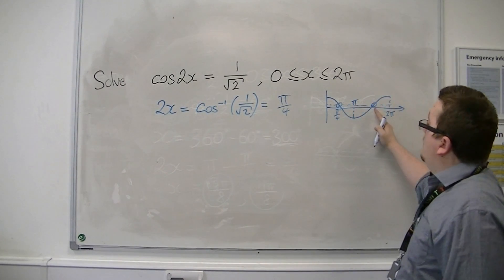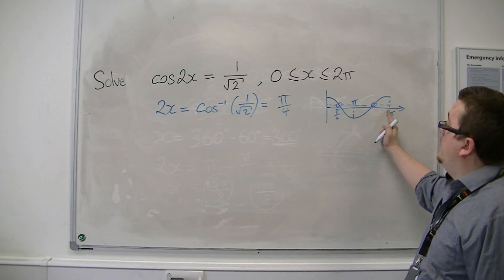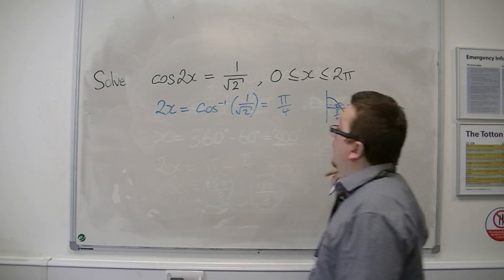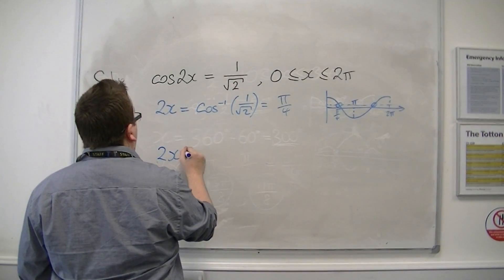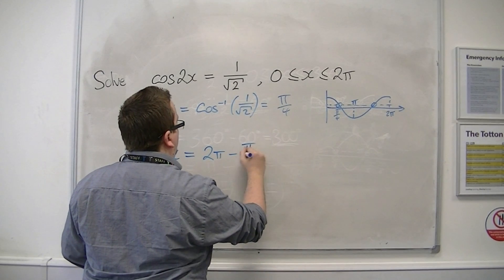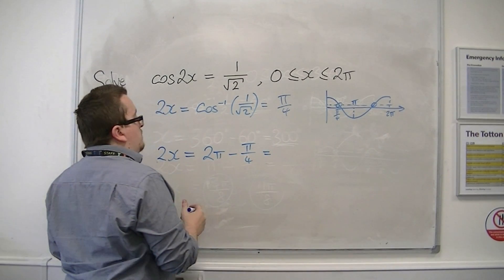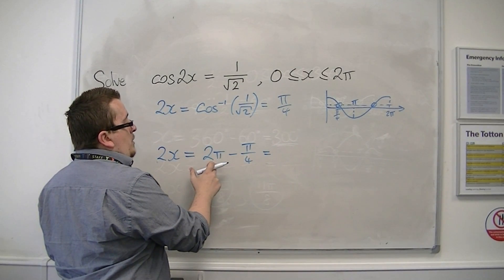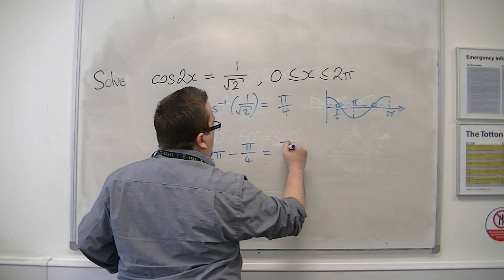You can see I can get my second solution by doing 2pi take away pi over 4, much the same way as I did the last one. So that's 8pi over 4,